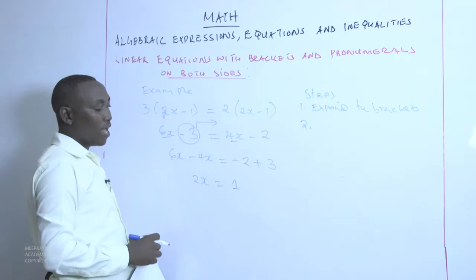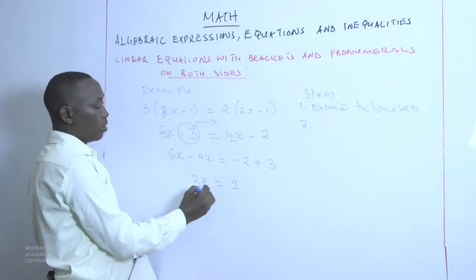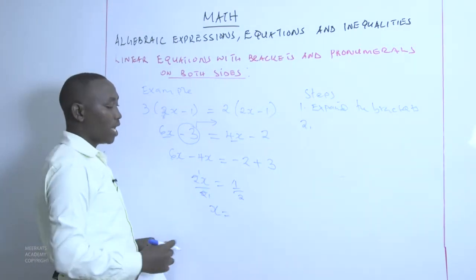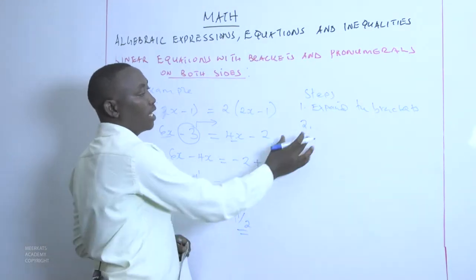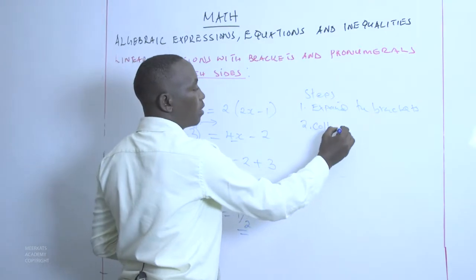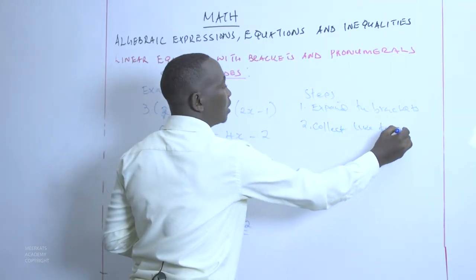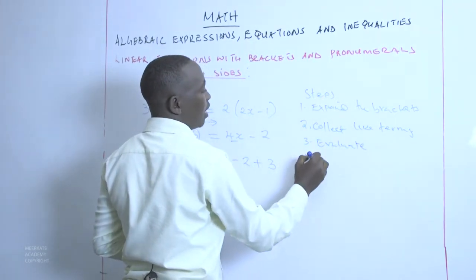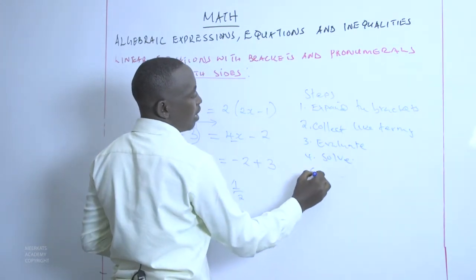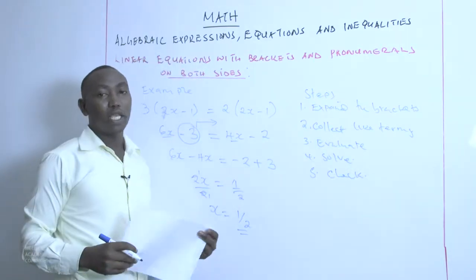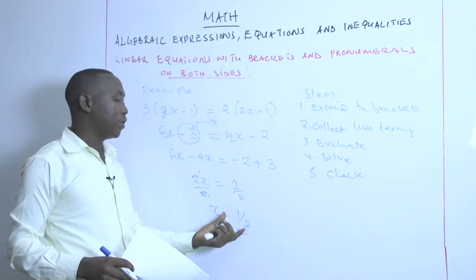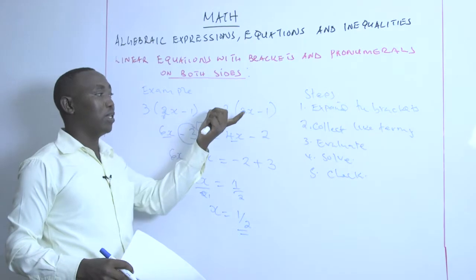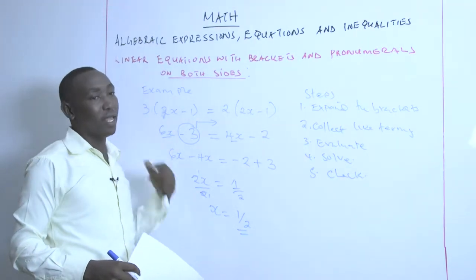To get the value of X, we divide both sides by 2, which gives us X equals one half. The second step is to collect like terms, then evaluate, then solve. Step 5 is to check — in checking, you verify whether it is true that when you replace X with one half, you get the exact values on both the right-hand side and the left-hand side.